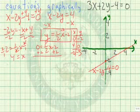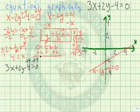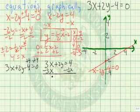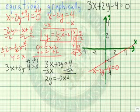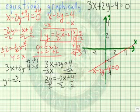Now let's do the same thing with the second equation, 3x plus 2y minus 4 equals 0. Adding 4 to both sides gives 3x plus 2y equals 4. Subtracting 3x from both sides gives 2y equals negative 3x plus 4. Dividing by 2, we get y equals negative three-halves x plus 2.